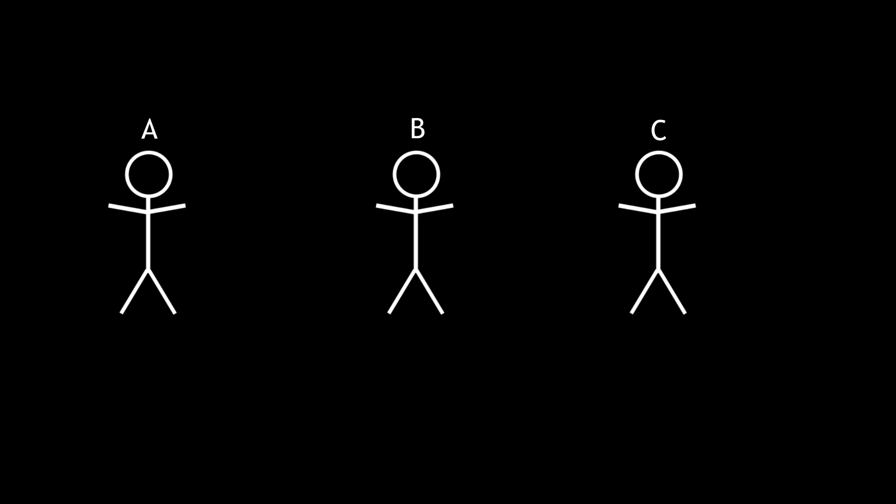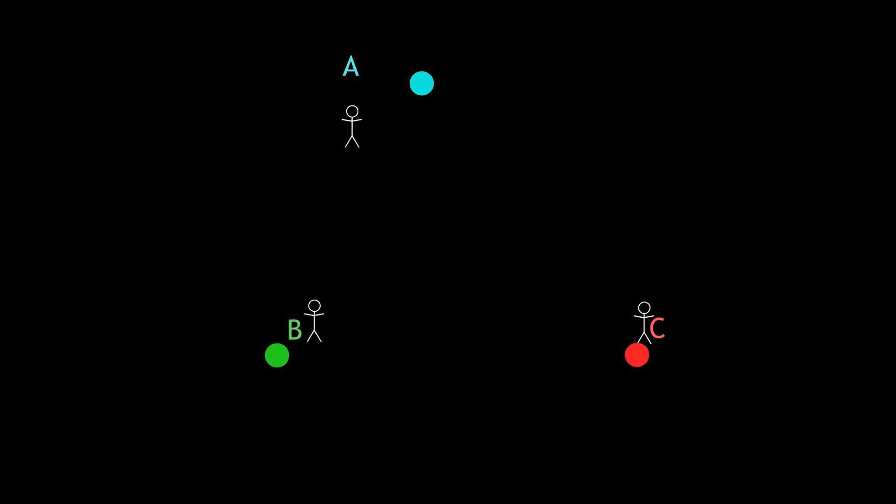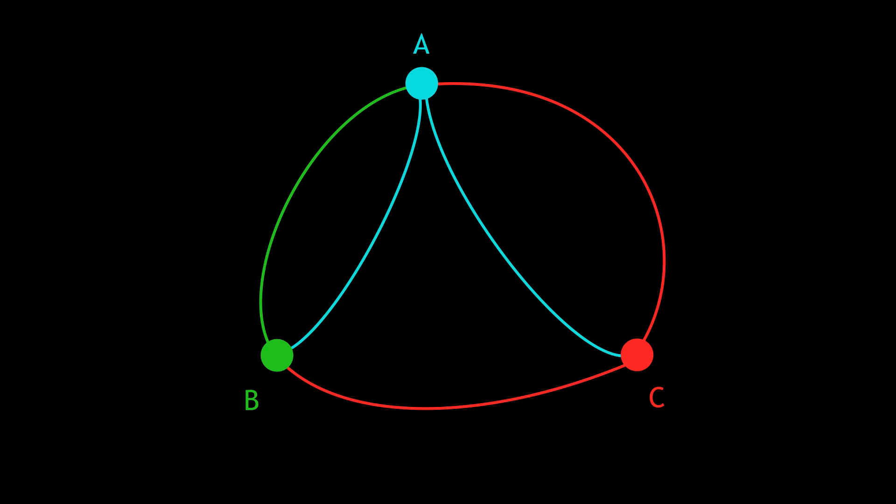Can we find a quicker method to solve these kind of problems? Let's take each suspect and represent them as a small dot in space, or a node. Now, B always accuses A, so we could represent this by drawing a directed line from B to A. C says they're not the thief, but we could think of this as being equivalent to accusing everyone else, both B and A. So C has a line going to B and a line going to A. Similarly, A says they're not the thief, so they accuse both B and C.